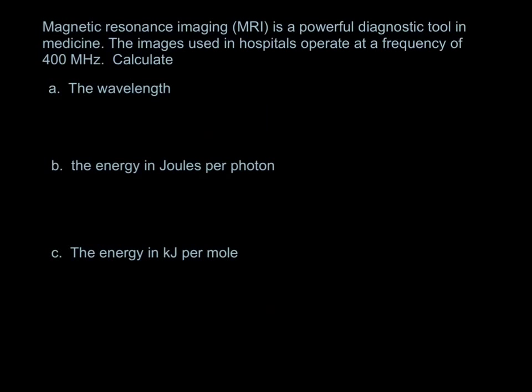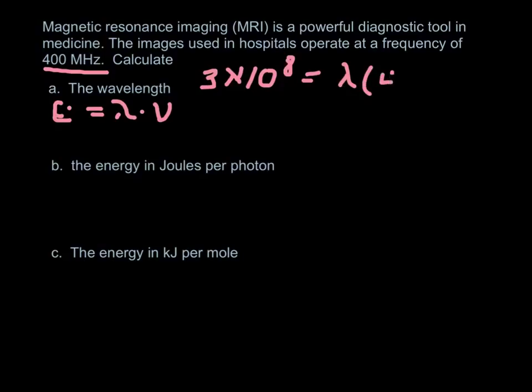The kinds of problems that we might see are going to look kind of like this. MRI is a powerful diagnostic tool in medicine. The images used in hospitals operate at a frequency of 400 megahertz. Mega just means 10 to the 6. So we want to change that frequency to wavelength. So we're going to remember that we have this equation. C is wavelength times frequency. So 3 times 10 to the 8th equals the wavelength, which we're looking for, times the frequency. So that would be 400 times 10 to the 6th hertz. So the wavelength is going to come out to be 0.75 meters.